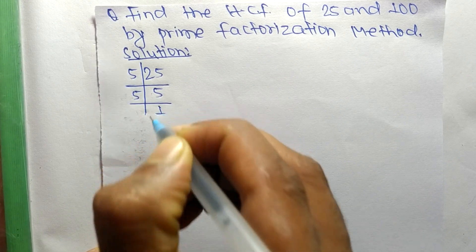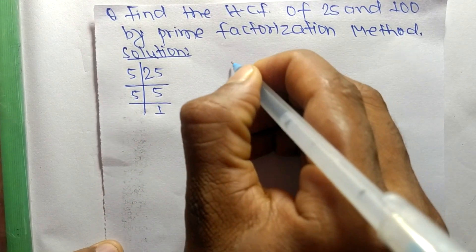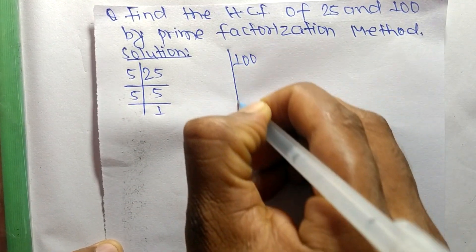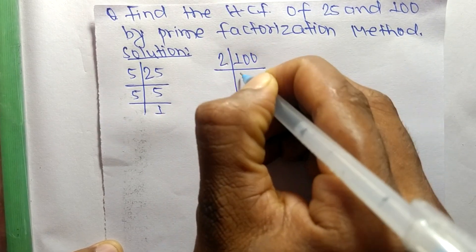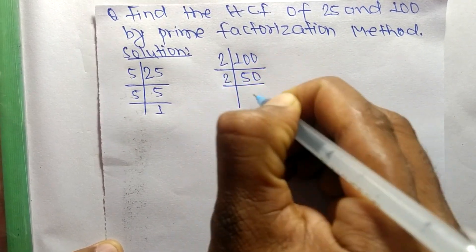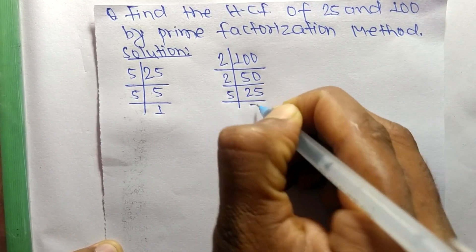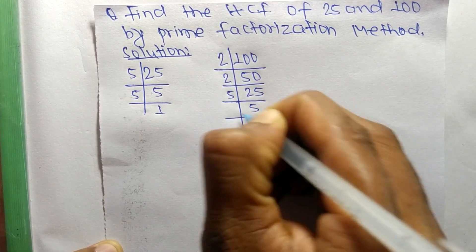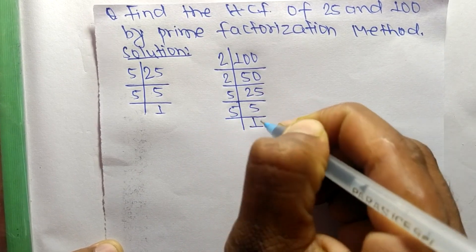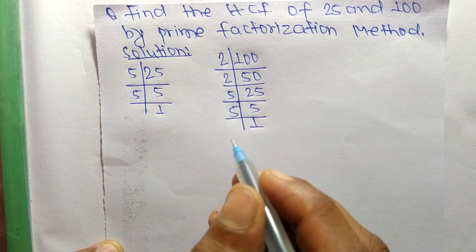And 5 times 1 means 5. Like this, the prime factors of 100 are: 2 times 50 means 100, 2 times 25 means 50, 5 times 5 means 25, and 5 times 1 means 5.